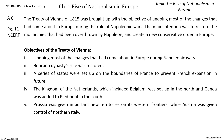Let's start with the answer. The Treaty of Vienna of 1815 was brought up with the objective of undoing most of the changes that had come about in Europe during the Napoleonic Wars. The main intention was to restore the monarchies that had been overthrown by Napoleon and create a new conservative order in Europe. The objectives of the Treaty of Vienna are as under.